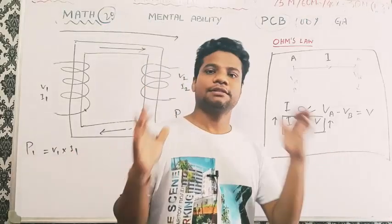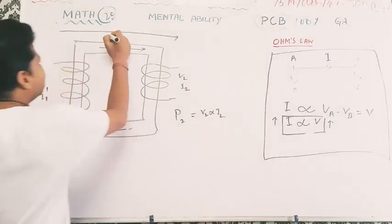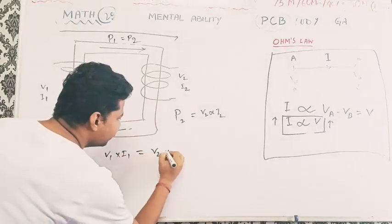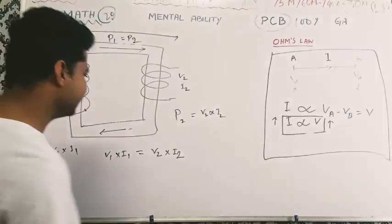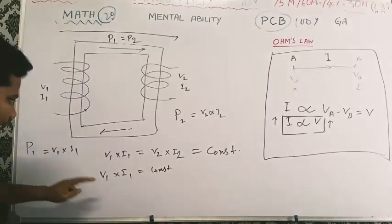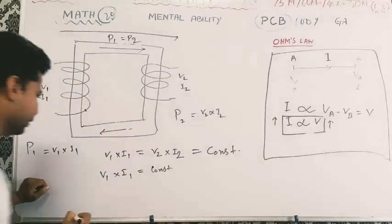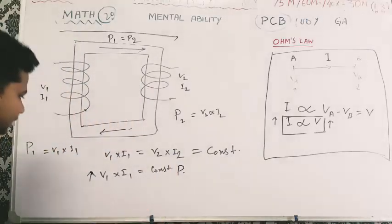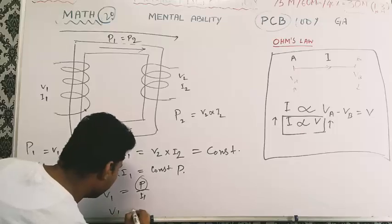So the losses are ignored for the ideal transformer. P1 equals P2. Someone who has P1 and P2: V1 into I1 equals V2 into I2. Power is fixed as a constant. So V1 into I1 equals a constant, V1 into I1 goes to constant, at which point I can say it is constant.